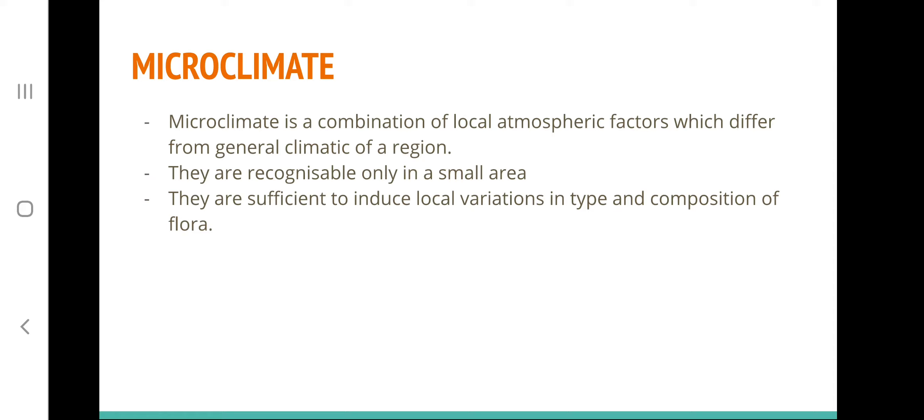For example, the microclimate under a log present in a forest will be different from the surrounding area. Under the log it will be more humid, the temperature will be less, and there is no direct sunlight. The species present under the log will be different — those which cannot tolerate direct sunlight or need higher humidity and moisture will be found there. This illustrates how microclimate is sufficient to induce local variation in the type and composition of flora.